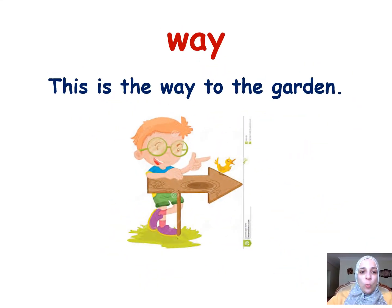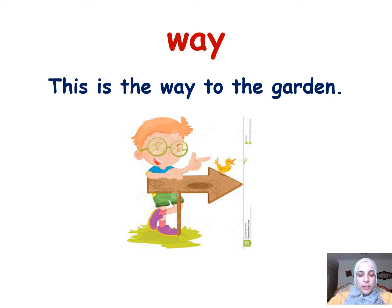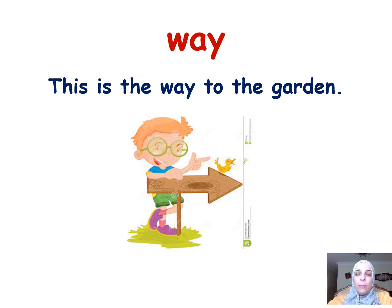Way. This is the way to the garden. It's like a path or something. When I'm lost, I look at the map, and the map shows me the way. My first word is way.